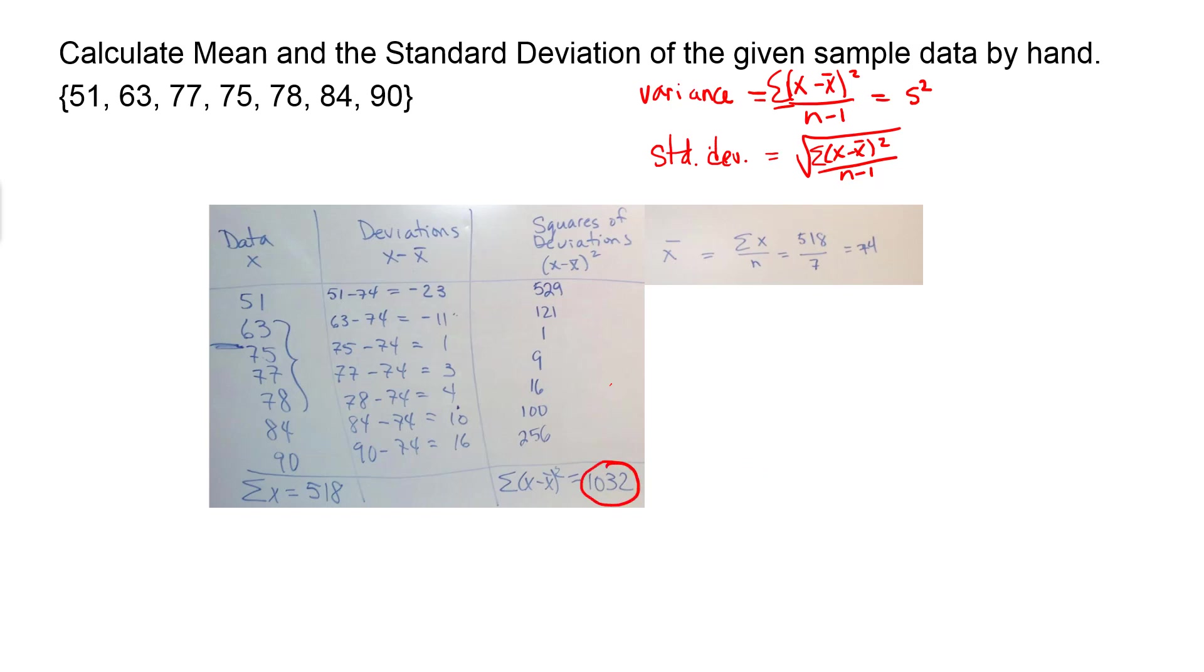First before we find the square root we need to do it's a kind of average so we're going to divide by the number of data values but minus 1. So first you divide it by n minus 1 which is 6 and then that gives you the 172 there and so then you take the square root. So you should get about 13.1.